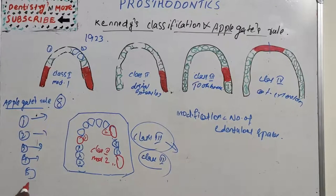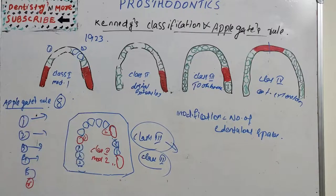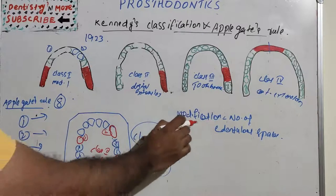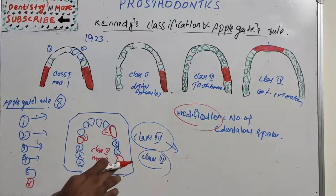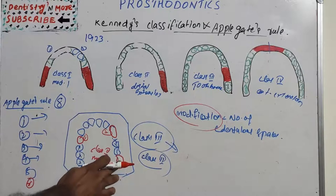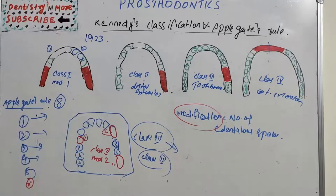Rule number 6: edentulous areas other than the most posterior one which determines the classification are referred to as modifications. The most posterior area determines Kennedy's class, and the remaining edentulous areas are counted as modifications.